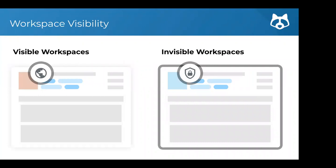When setting up a workspace, you'll be asked whether to make it visible or invisible. A visible workspace means someone searching protocols.io can see a public-facing profile of it. An invisible workspace means nobody can see it — only people you actively invite will be able to access it. Keep those things in mind when you're setting up a workspace.